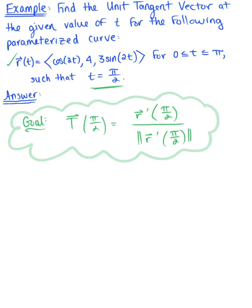We need to start by finding the tangent vector. Looking at our parameterized curve and differentiating, we are left with the vector-valued function ⟨-2 sin(2t), 0, 6 cos(2t)⟩.